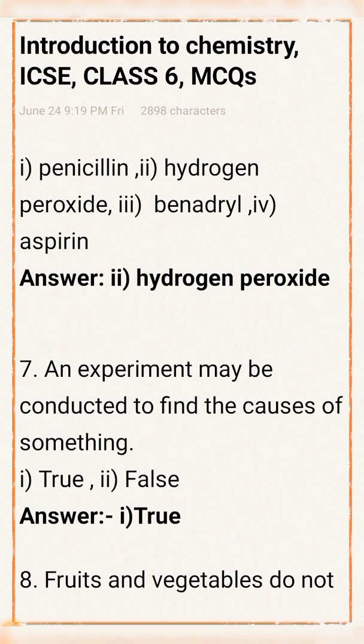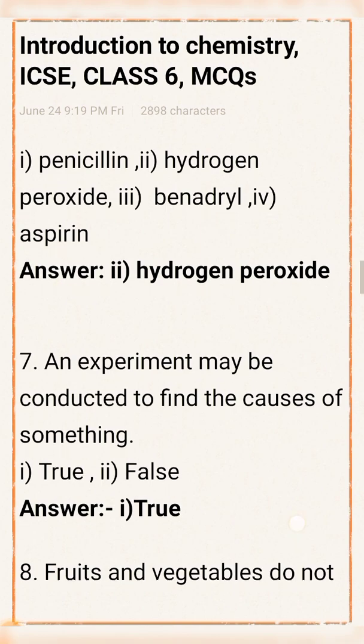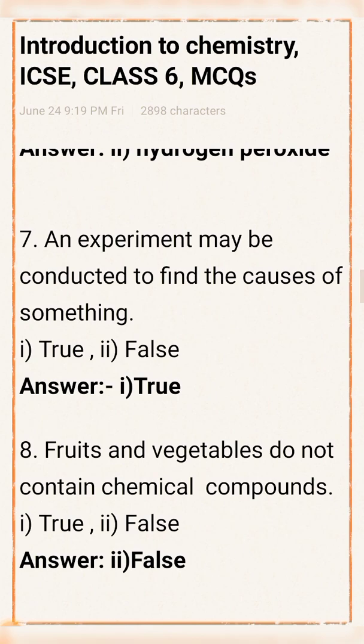Question number 7: An experiment may be conducted to find the causes of something. This statement is true or false? This statement is true. Question number 8: Foods and vegetables do not contain chemical compounds. Statement true or false? Answer: The statement is false.